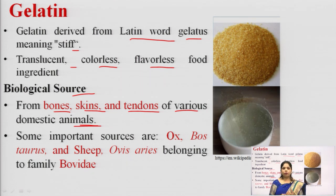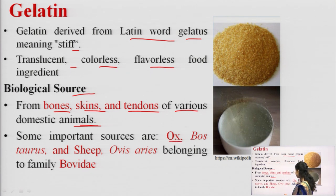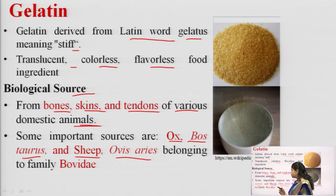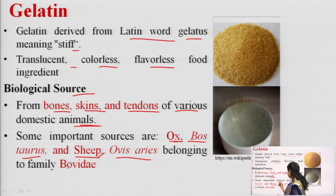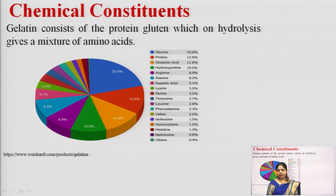Gelatin can be obtained from bones, skin, and tendons of animals. These animals may be ox or sheep. For ox, the species used is Bos taurus, and for sheep it is Ovis aries. Both belong to the family Bovidae. These are the animal sources of gelatin — these key points are important to remember.